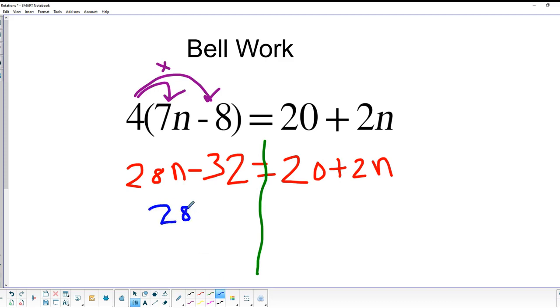So 28n yells over to 2n, says come over to my side, and you know when you cross the equal sign you'll have to become your opposite. And it's like saying subtract 2n from both sides.